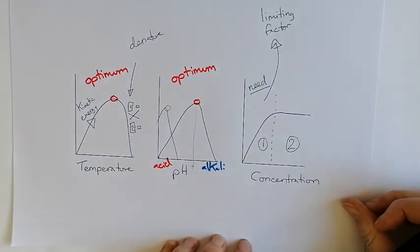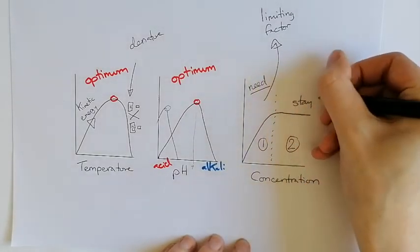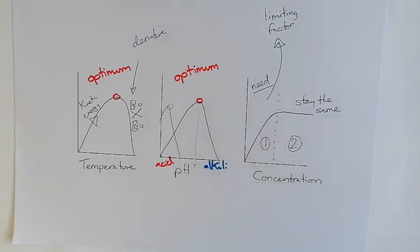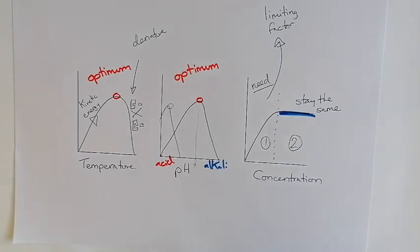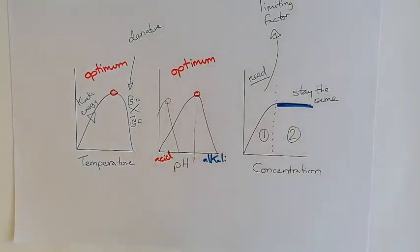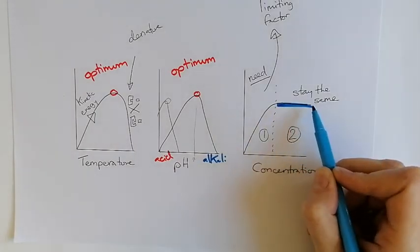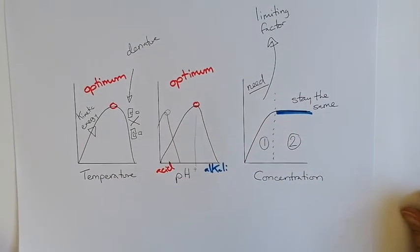And when we've got enough of whatever that is, it stays the same level. Now this is one of the places where I see students make the same mistake every single time. This flat bit here does not mean that the reaction has stopped. It just means that it stopped getting faster. And if something stops getting faster, it means that it stays the same speed. If you're in a car, you're accelerating up to 70 miles an hour on the motorway, and then you stay at 70 miles an hour. So this reaction is going very quickly, but it's not going any slower, and it's not going any faster. It is saying the same rate of reaction.